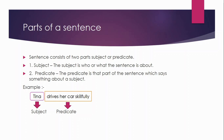Here is an example: 'Tina drives her car skillfully.' Tina is the subject and 'drives her car skillfully' is the predicate. Why is Tina the subject? Because it tells what the sentence is about. And 'drives her car skillfully' is the predicate because it tells something about the subject.